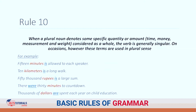Rule ten: when using specific quantities — minutes, kilometres, or sums of money — they are generally treated as singular. For example, '15 minutes is allowed to each speaker.' '10 kilometres is a long walk.' '50,000 rupees is a large sum of money.' However, when referring to them separately, they can be plural: '50,000 rupees were spent on charity.' 'There were 30 minutes for the countdown.' 'Thousands of dollars are spent each year on education.'